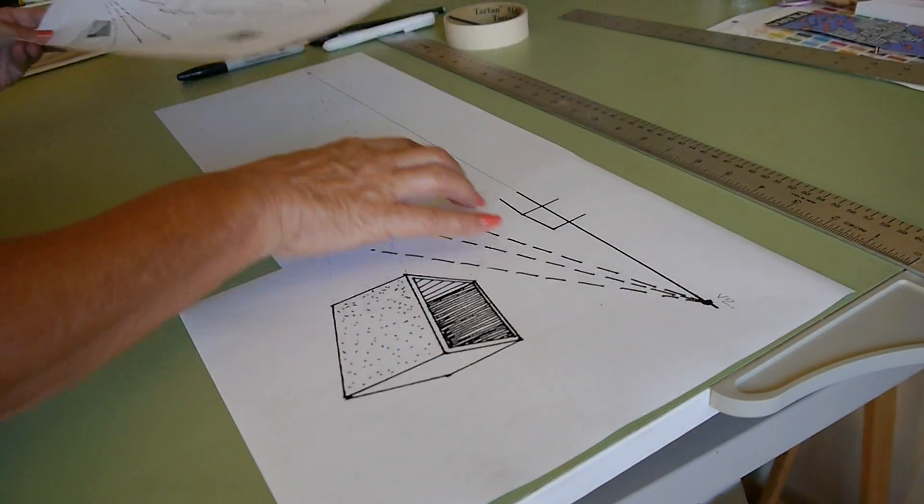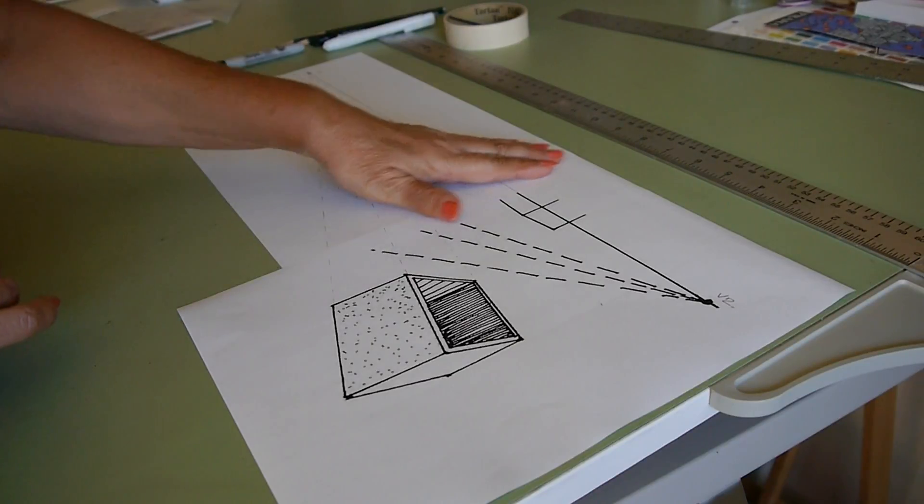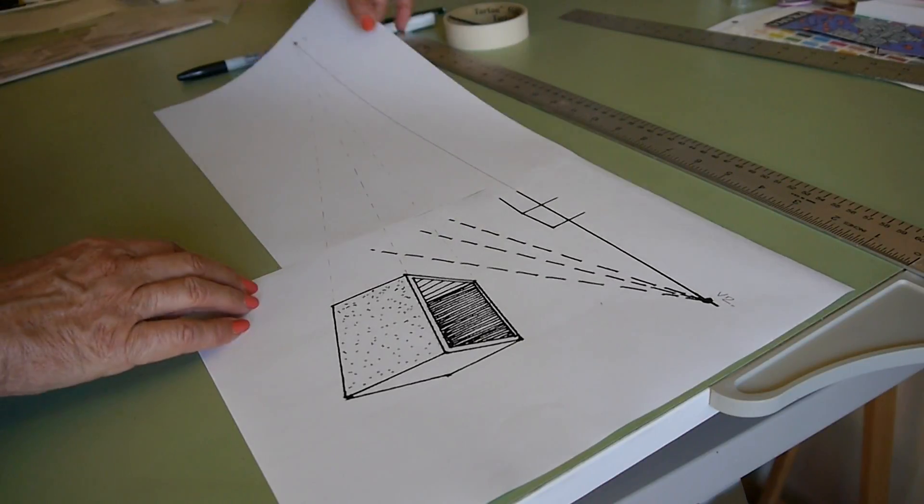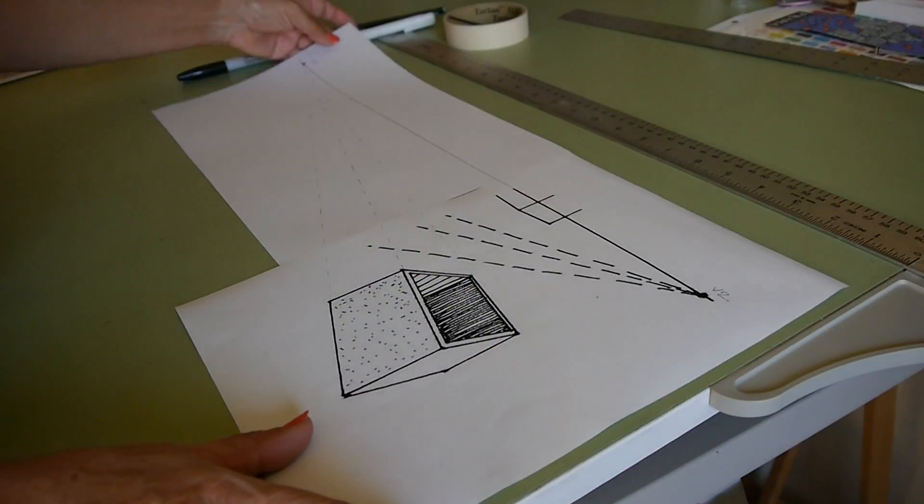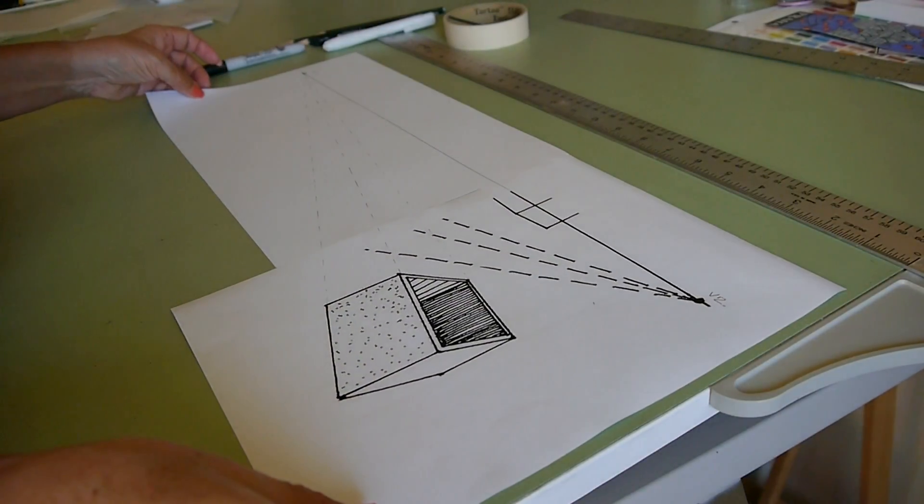What I'm going to show you now is how you find the vanishing point. The best way is to put another piece of paper. I tape it in this case on the back. I'm gonna put my paper, I'm just gonna put my paper on the table.